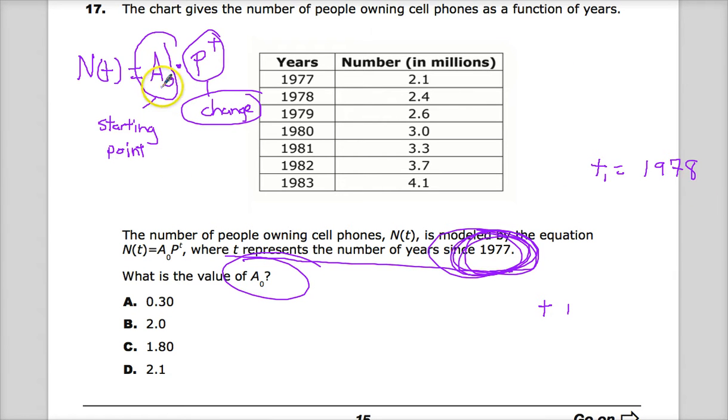But what I can find out is when you see this A₀, it means what's the starting point, what's the starting time. So since the number of t represents the number of years, and one year would be 1978, T of zero would be 1977. So the question says, what is this value? And since this is giving me the value of cell phones in millions, 1977 is 2.1. So the answer to number 17 is D.